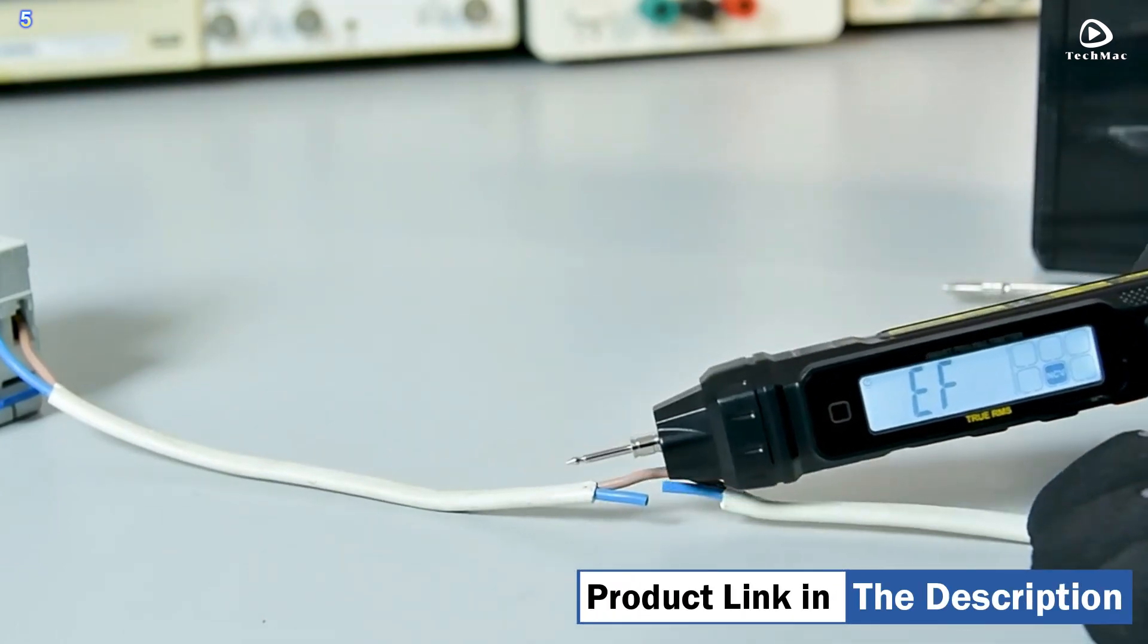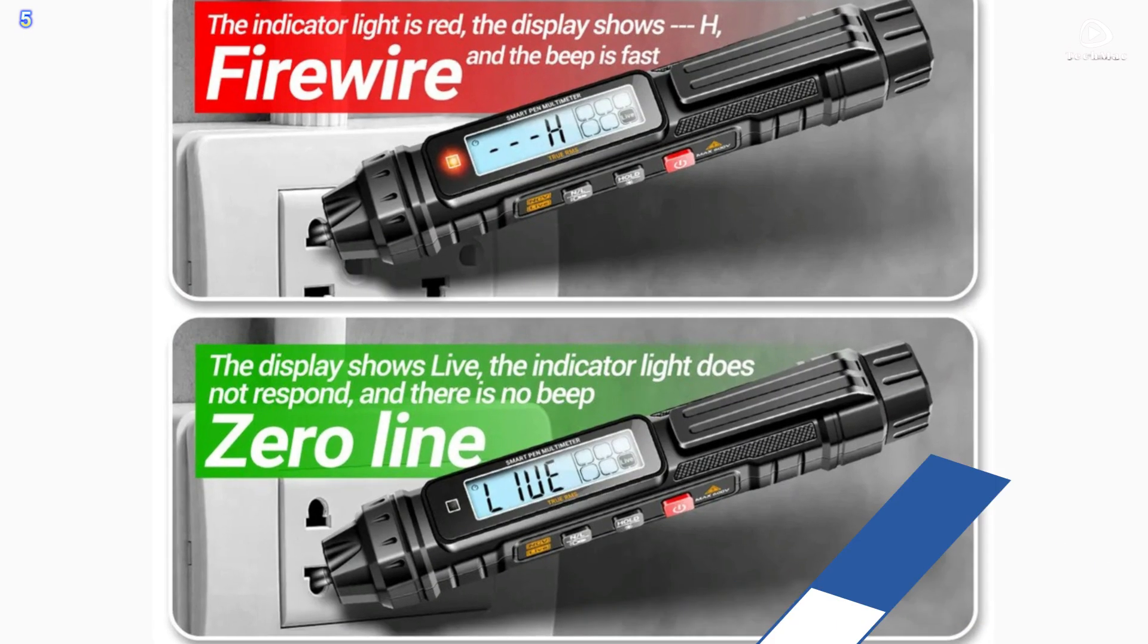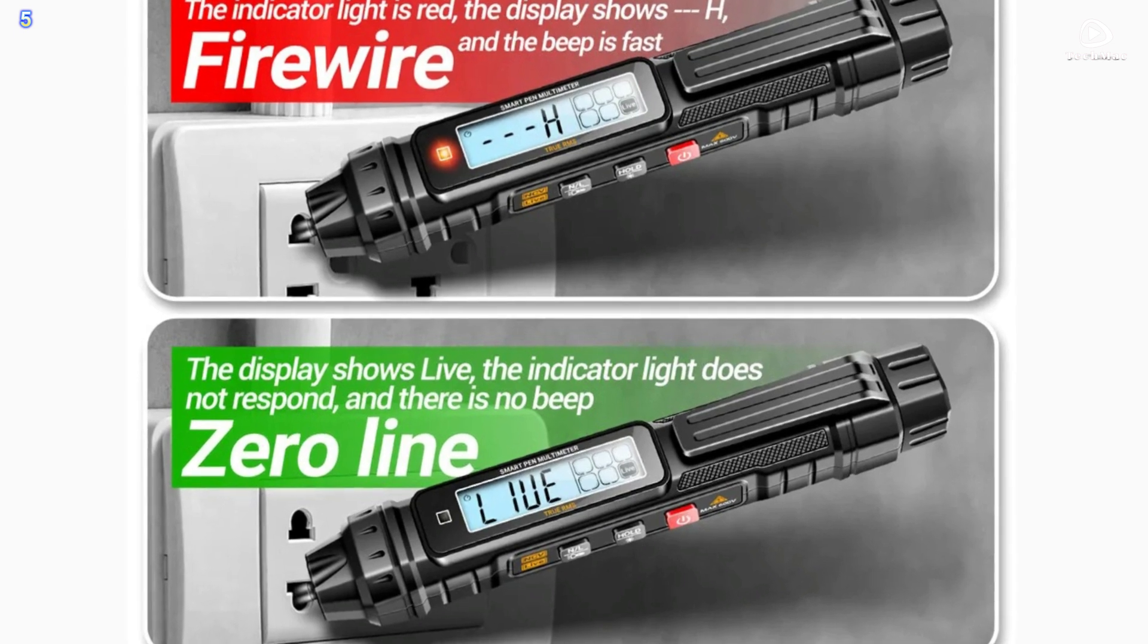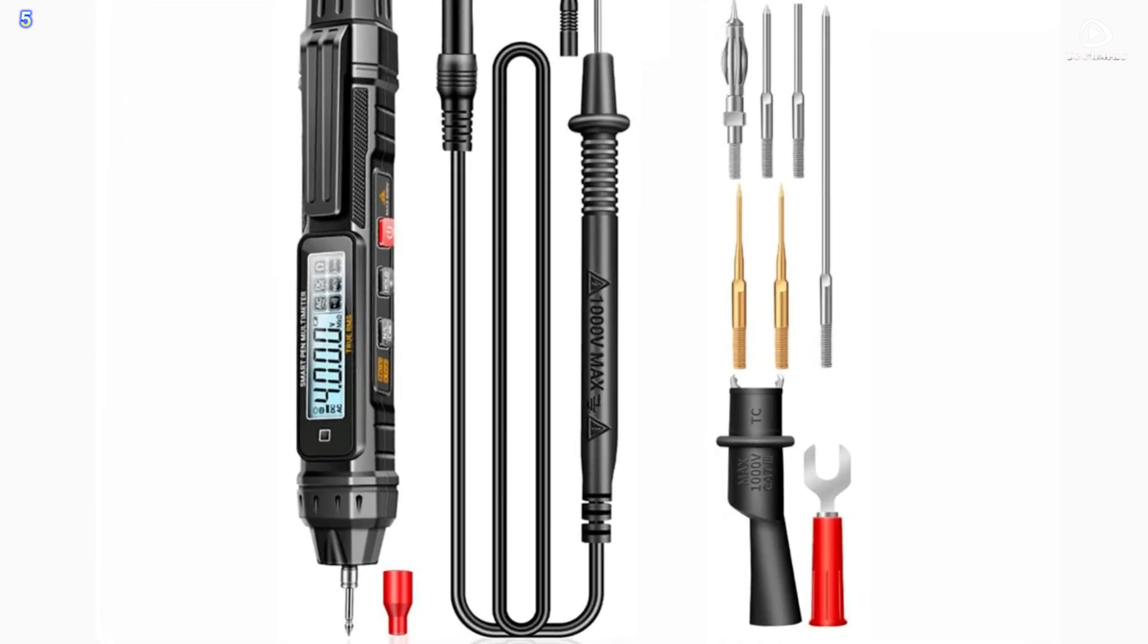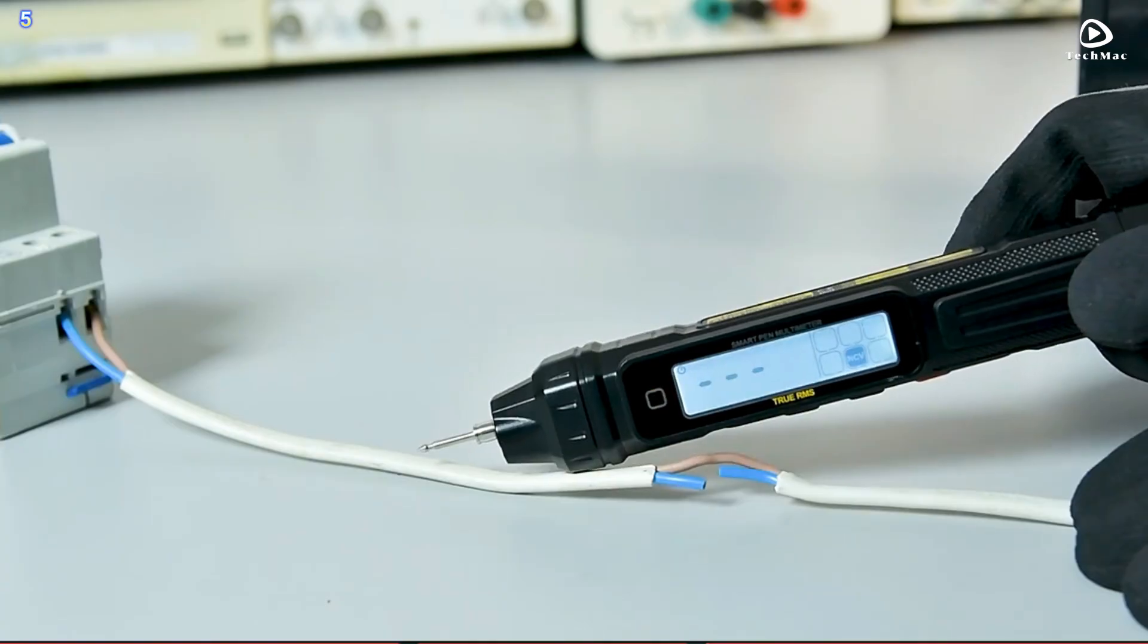NCV non-contact detection: NCV non-contact measurement function can measure electricity without contact to prevent electric shock hazards. Bright flashlight lighting: the dark environment at night can be used as auxiliary lighting to illuminate the front for you.